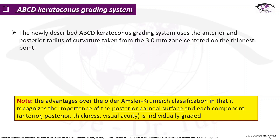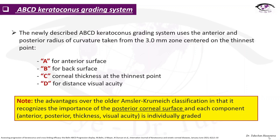The ABCD keratoconus grading system is a newly described classification which uses the anterior and posterior radius of curvature taken from the 3 mm zone centered on the thinnest point. A stands for anterior surface, B for back surface, C for corneal thickness at the thinnest point, and D for distance visual acuity. Its advantage over the older Amsler-Krumeich classification is that it recognizes the importance of the posterior corneal surface and each component is individually graded.